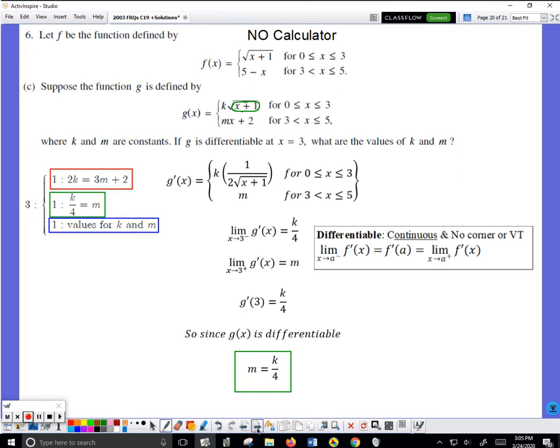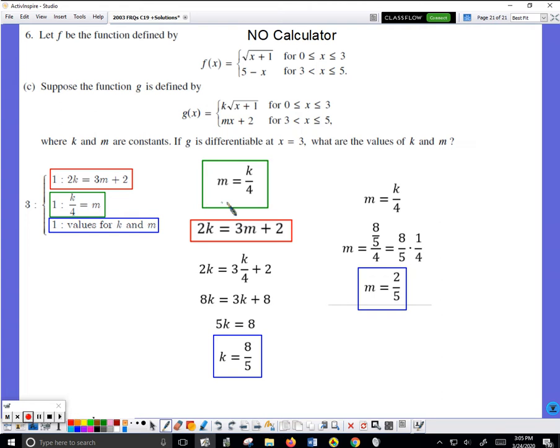Now I have two equations with two unknowns, the green and the red from the earlier part. I can use these two to go find k and m. I will take the k over 4, put it in place of m.